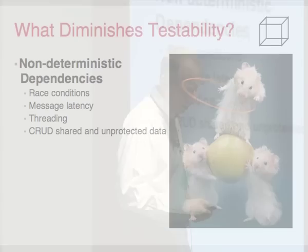Non-deterministic dependencies — what I call NDDs — include race conditions, message latency, threading, and create/replace/update/delete operations on shared and unprotected data. These are basically things that are hard to control in an environment, and an application may allow or even rely on them. They tend to cause failures intermittently.